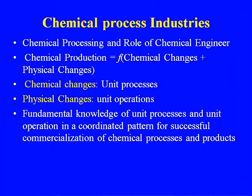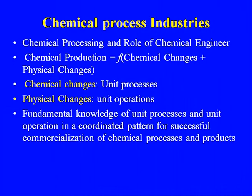Chemical production in the chemical process industry is a function of chemical changes and physical changes. Chemical changes involve reactions of reactants to produce products, dealt with by unit processes. Physical changes involve separation of products, dealt with by unit operations. Fundamental knowledge of unit processes and unit operations in a coordinated pattern is essential for successful commercialization of chemical processes and products.